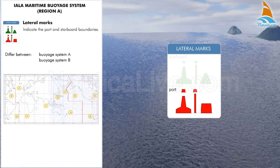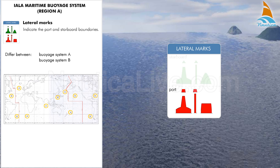The port hand mark has the shape of a can or a spar and is coloured red, with a single red can as a top mark, if there's any. By night, a port hand mark shows a flashing red light.